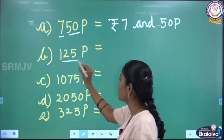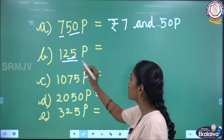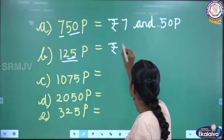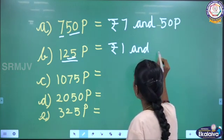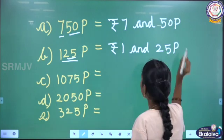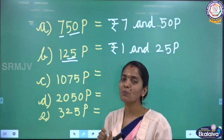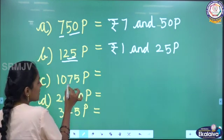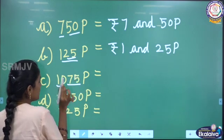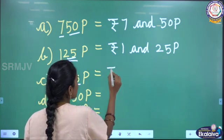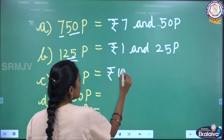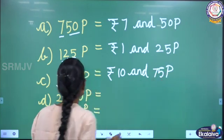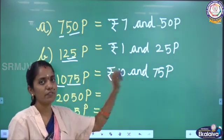Next, we have 125 peise. The first 2 digits on the right are peise, remaining number is rupees. Write rupees symbol — 1 rupee and 25 peise. 125 peise is equal to 1 rupee and 25 peise. Next, we have 1075 peise. The first 2 digits on the right are peise, remaining number is rupees. Write rupees symbol and 10, and 75 peise. 1075 peise is equal to 10 rupees and 75 peise.